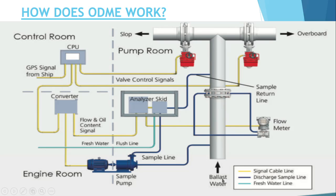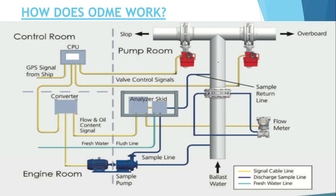Suppose the ballast water or slop is flowing through here — this is a flow meter measuring the flow. If the slop is meeting the discharge criteria, this valve will remain open and it will go overboard and the other valve will be closed. But when the water is going and it is not meeting the discharge criteria, the water will go back to the slop tank.